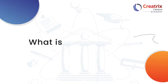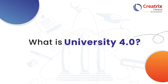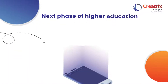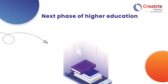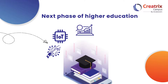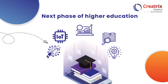What is University 4.0? University 4.0 is the next phase of higher education, integrating AI, IoT, and data analytics to revolutionize learning, research, and administration for greater efficiency and innovation.